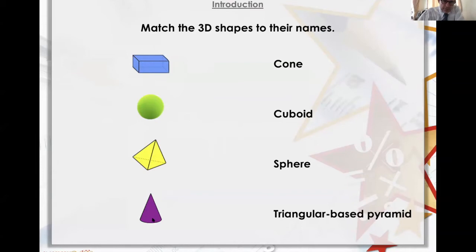It's round at the bottom and a triangle on top, so that one's a cone. That one has to be a sphere, like a circle, a three-dimensional circle. This is a pyramid but the bottom bit is triangular, so it's a triangular-based pyramid, which means this one is a cuboid.